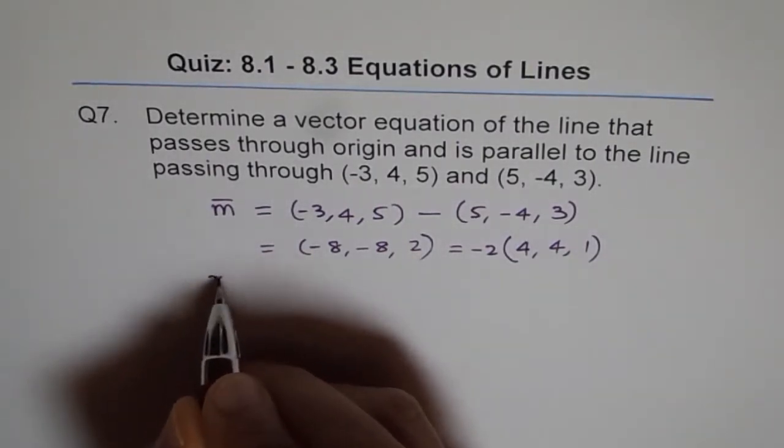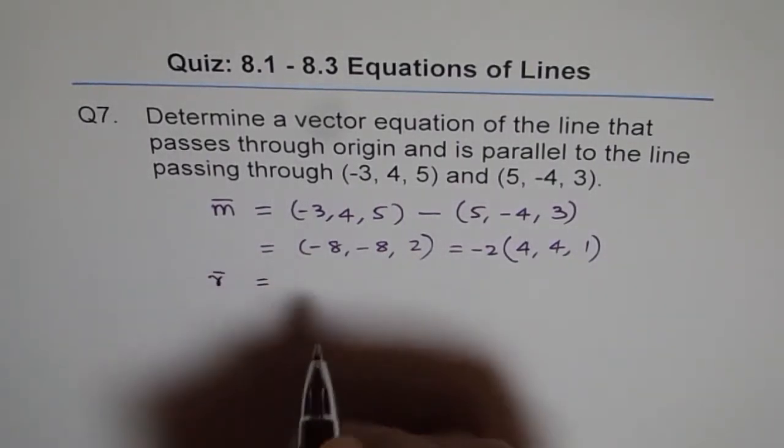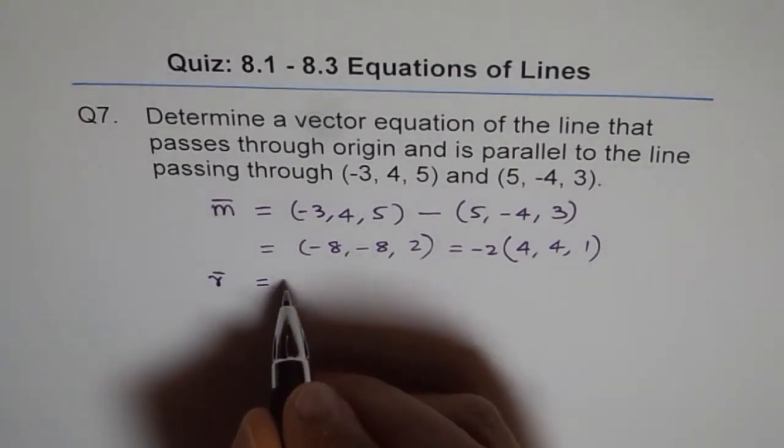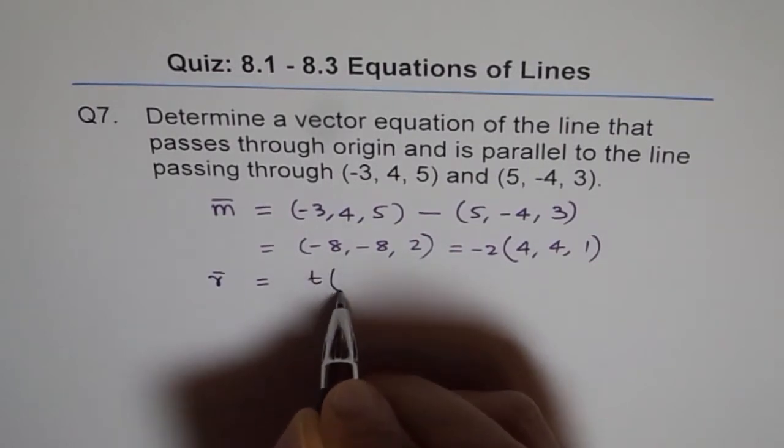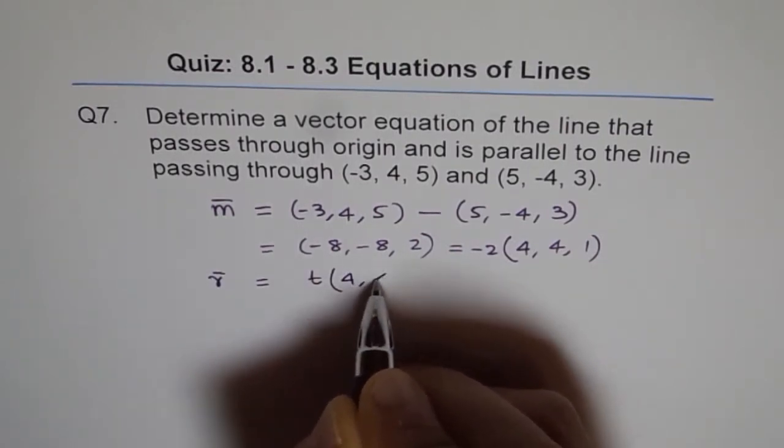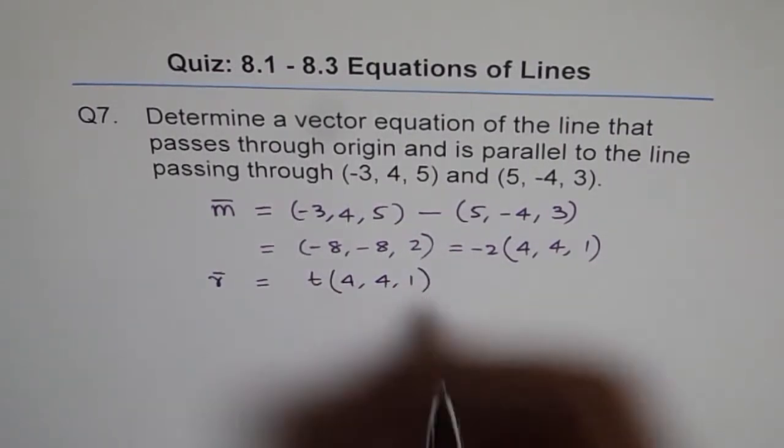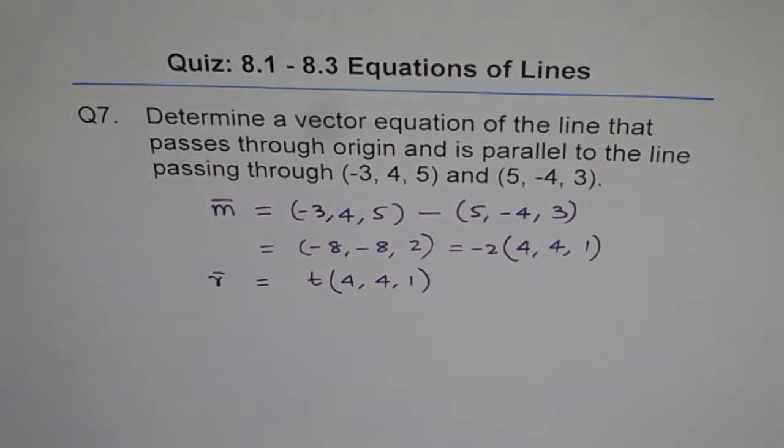So the vector equation R could be given as - there is no need to write 0 plus 0 plus 0 - we can straight away write t times (4, 4, 1). So that becomes our vector equation.